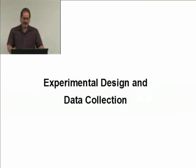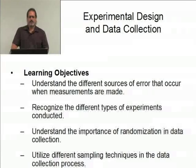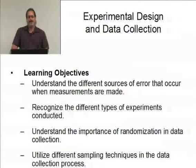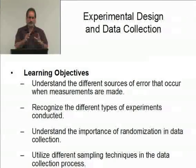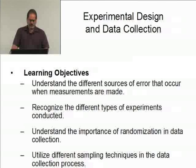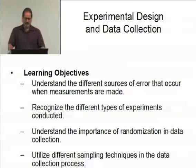Let's talk about experimental design and actual data collection. The learning objectives for the next few videos are: first, understand the different sources of error that occur when measurements are made. Whenever you measure something, there's going to be error. By understanding the sources of error, you can help control it and reduce it. We also want to recognize different types of experiments, understand the importance of randomization, and utilize different sampling techniques in data collection.